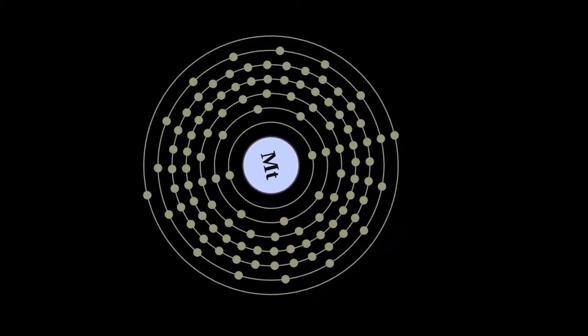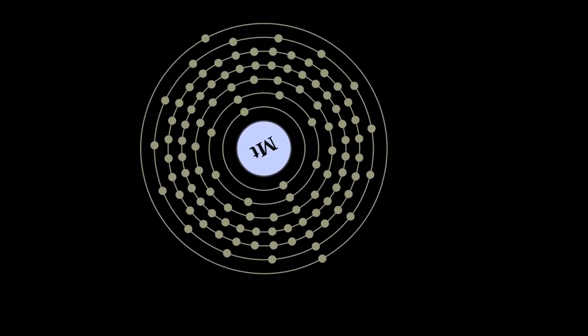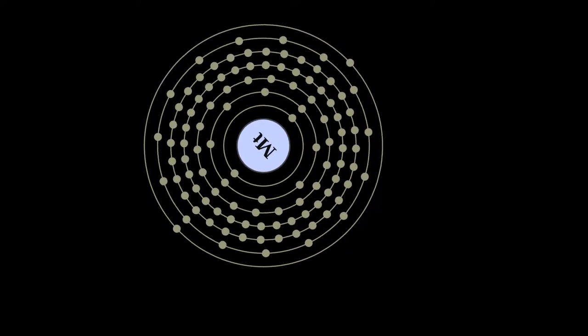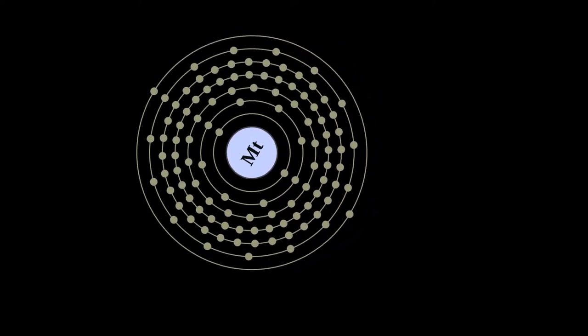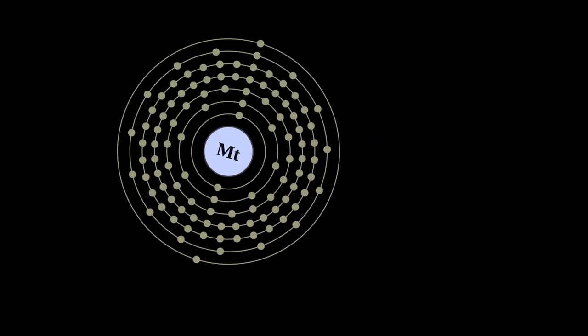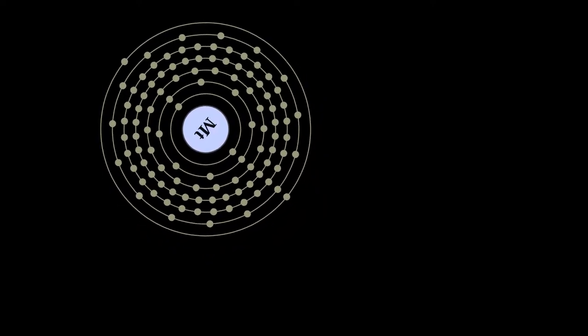Meitnerium is a synthetic chemical element with symbol Mt and atomic number 109. It is an extremely radioactive synthetic element, an element not found in nature that can be created in a laboratory.